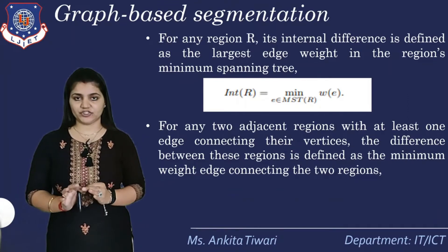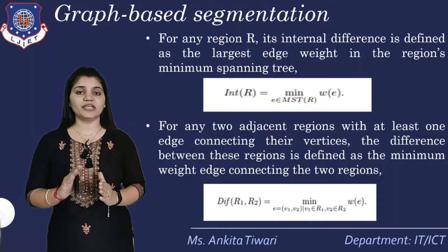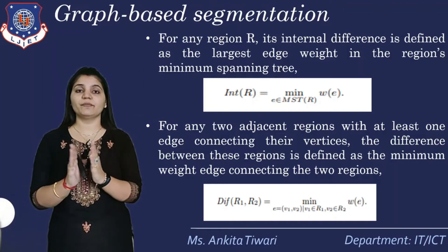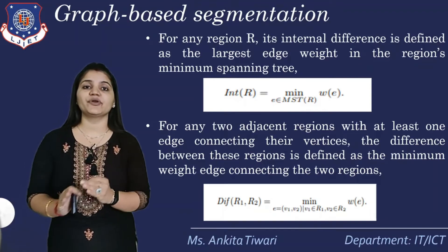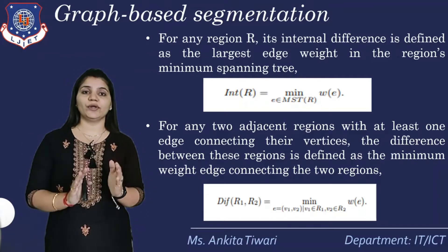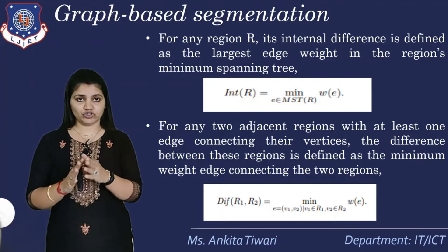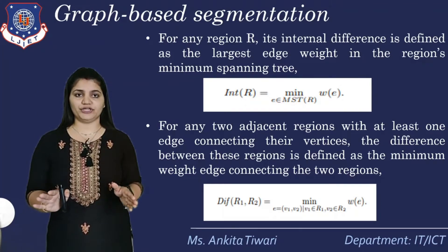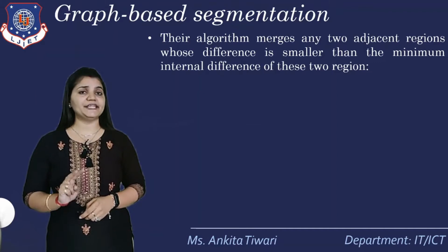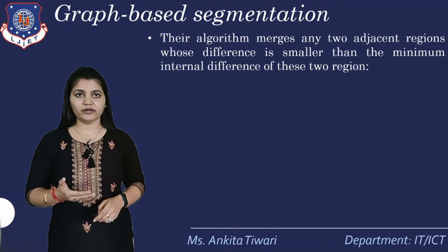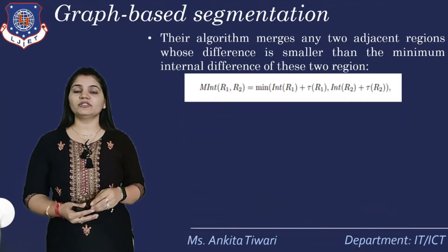The difference between R1 and R2 — the two regions when we are merging — we will be seeing the dissimilarity. The dissimilarity will be proportionate to the minimum value required: E equal to vertices V1 to V2, where V1 belongs to R1 and V2 belongs to R2, because both vertices should be at different proportions. Their algorithm merges any two adjacent regions whose difference is smaller than the minimum internal difference of the two regions.